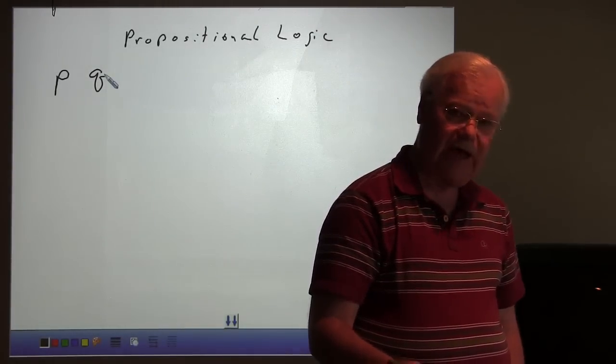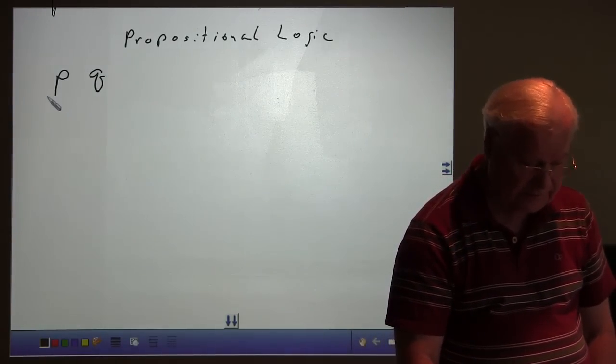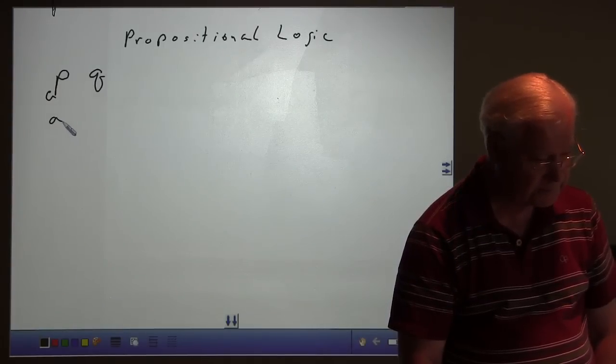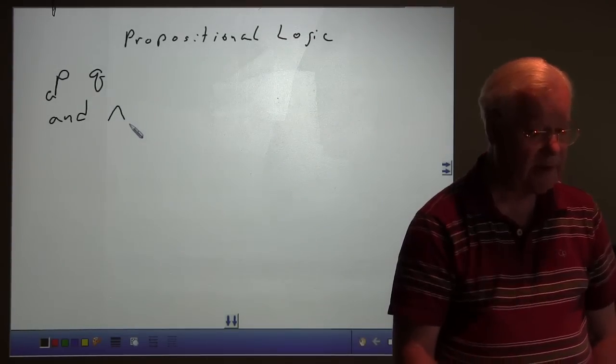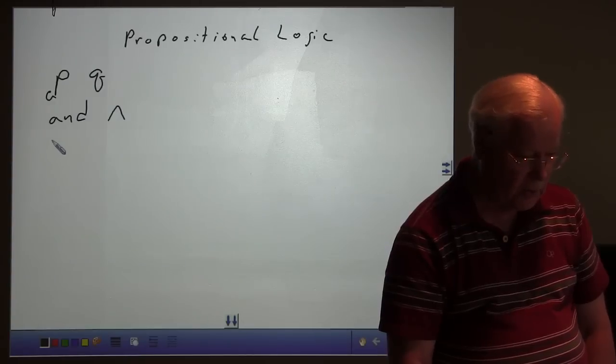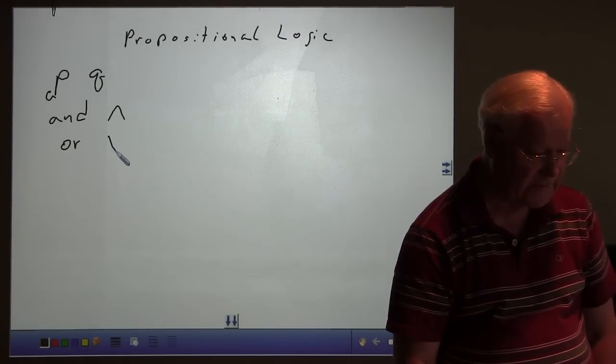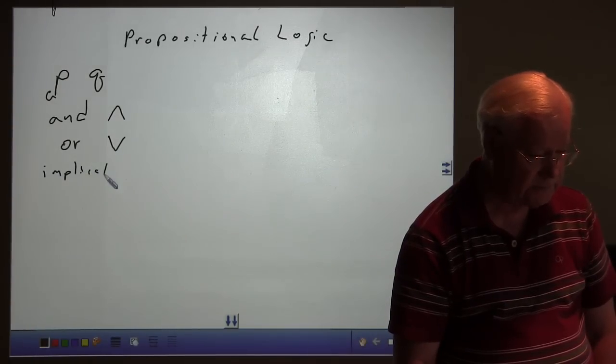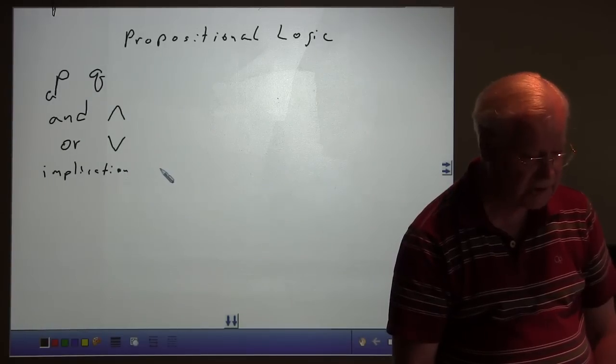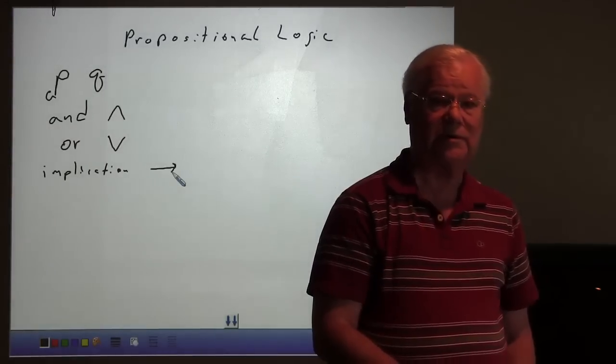There are three operations in propositional logic. Those operations are AND, and we show that with an upside-down caret. The OR goes the other way, looks like a V, and IMPLICATION, and that is shown as an arrow. All three of these concepts are very important in computer programming.